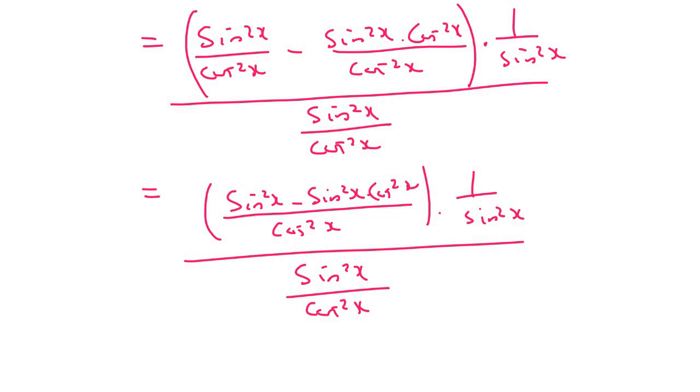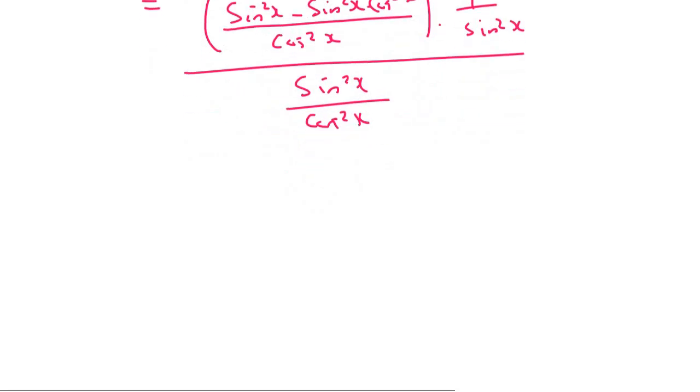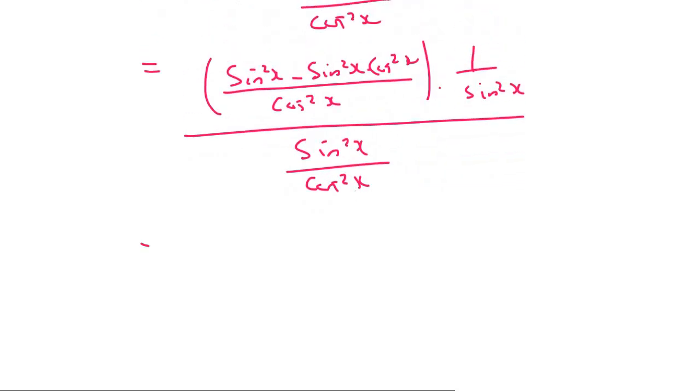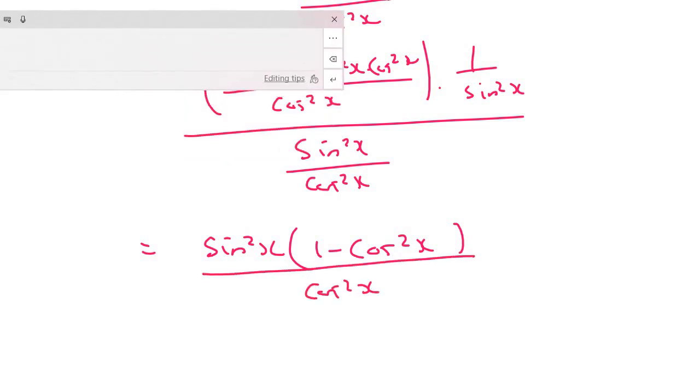At the top here, we could factorize in that little bracket. You see there's a sin²x which is common. Factorizing is usually very helpful. We can take out sin²x, and then you'd be left with 1 minus cos²x over cos²x times by 1 over sin²x.